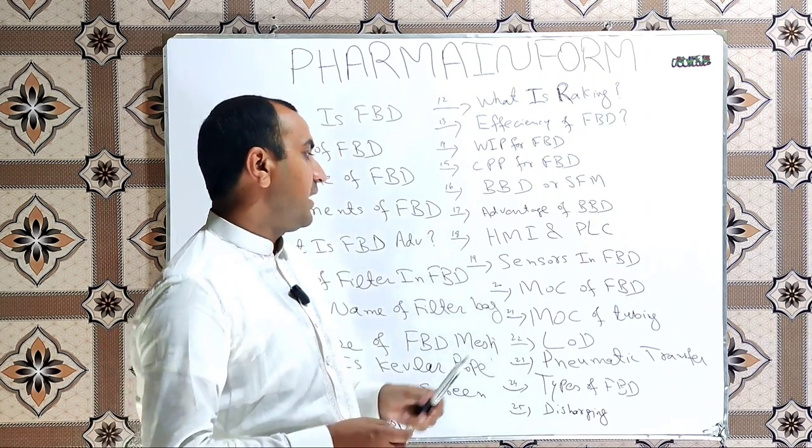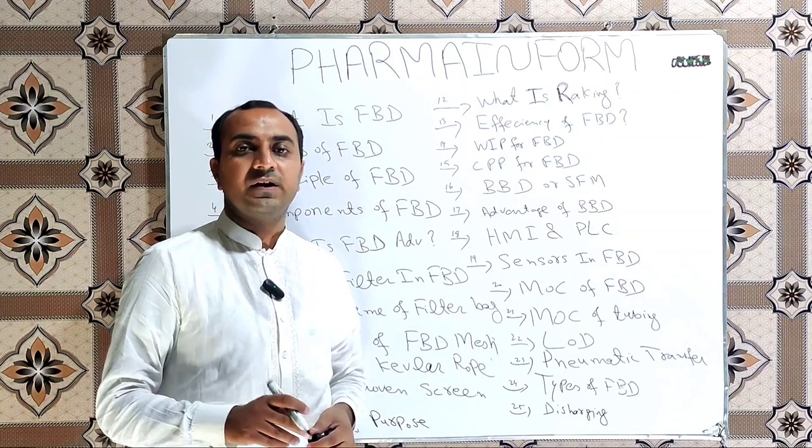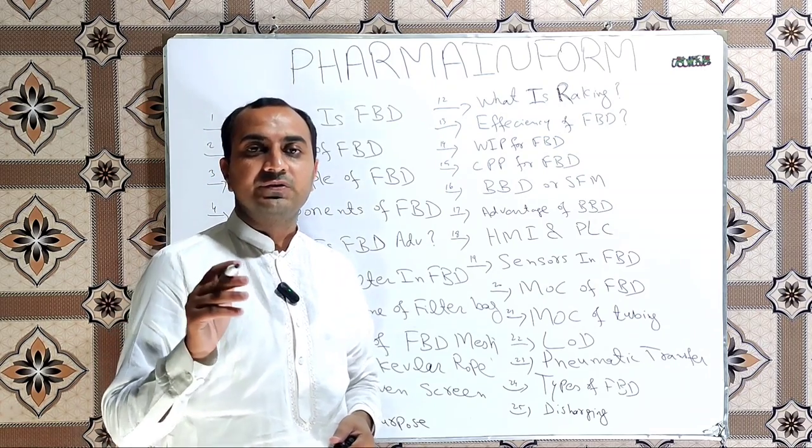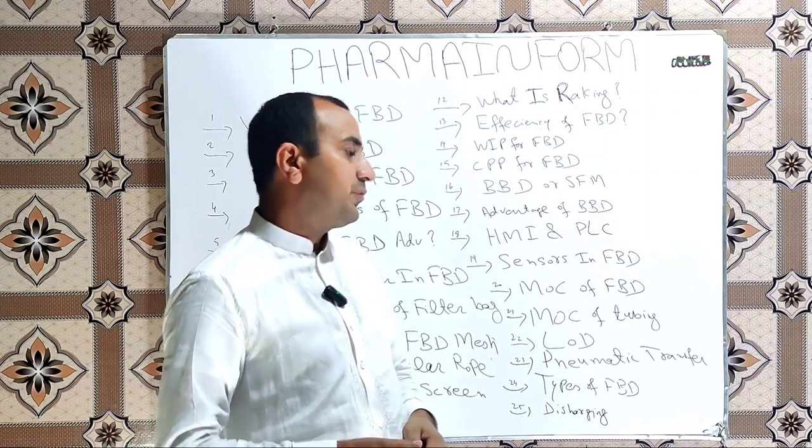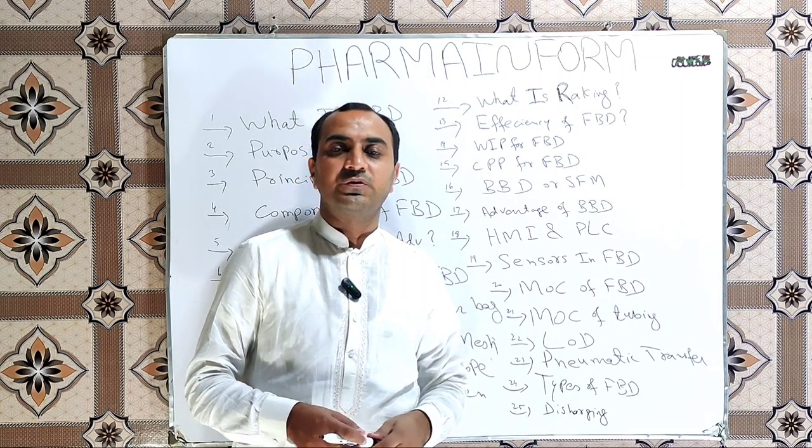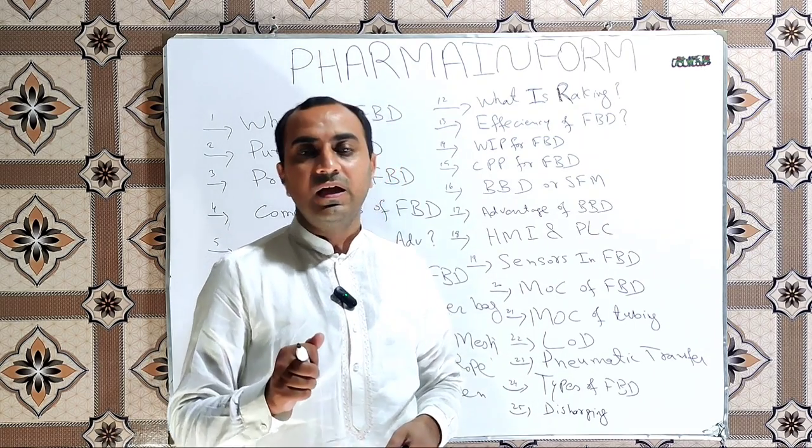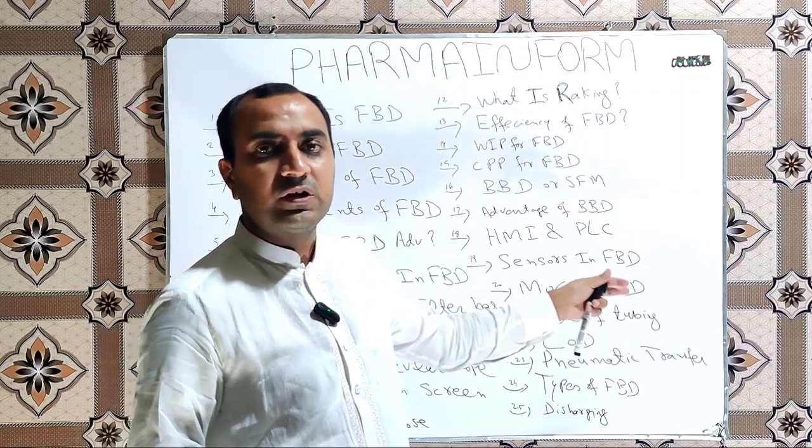And non-product contact parts are made through 304L. What is the MOC of tubing? The tubing or sealings which are used in FBD are made of food grade material.